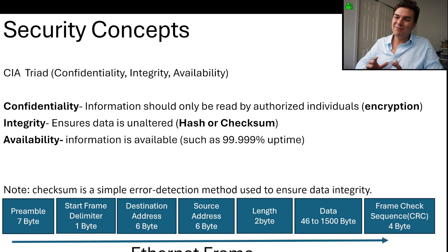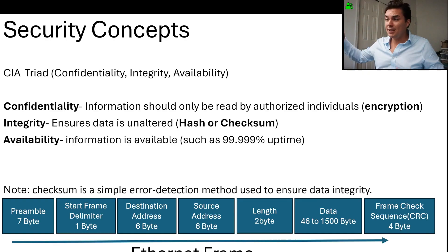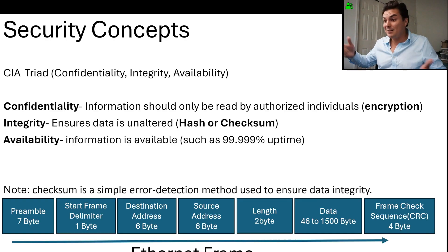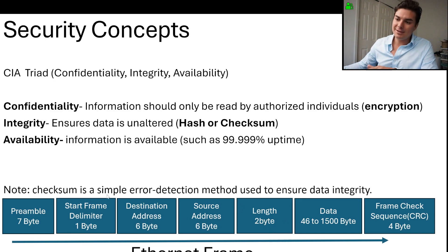And availability means that information is available when you need it. So let's say you go to the Amazon website — you need to make sure that you can access it and it's available and the website's not down. Here's an example of what the checksum looks like.